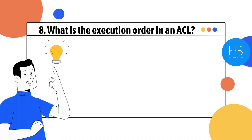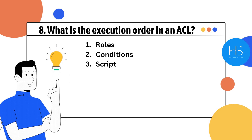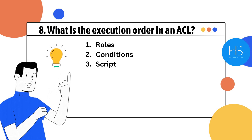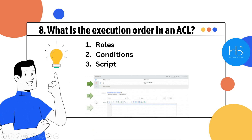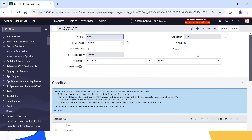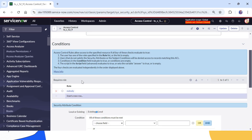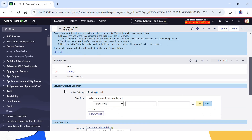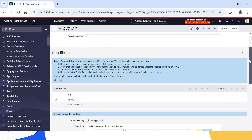Next: what is the execution order within an ACL? First the roles are evaluated, then conditions, and then the script. If you have defined all three in an ACL, the execution order is: roles, conditions, and script. Let's go to ServiceNow to show this quickly. If I click on Advanced and scroll down, you can see roles are calculated first, then conditions, then the script.